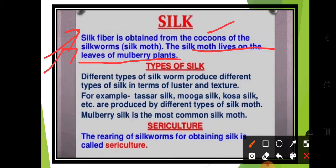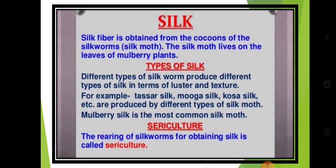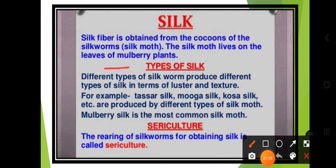These are special worms — they are not found under just any tree, they are found only on mulberry leaves. Different types of silk worms produce different types of silk in terms of their luster and texture properties.